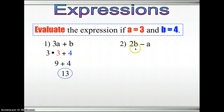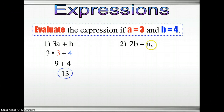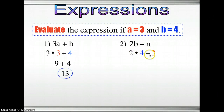Second example: 2b minus a. Replace b by 4 and a by 3. So it's going to be 2 times 4 minus 3. 2 times 4 is 8, minus 3 is 5.